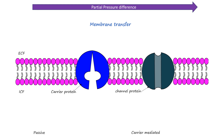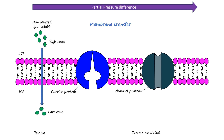Passive transport is the transfer of a drug across a membrane without the use of energy. It follows a concentration gradient, meaning the drug moves from an area of higher concentration to an area of lower concentration. Simple diffusion is a form of passive transport where lipid-soluble drugs pass directly through the lipid bilayer of the cell membrane. It works best for small, non-polar or lipid-soluble drugs because they can easily pass through the fatty layers of the membrane.